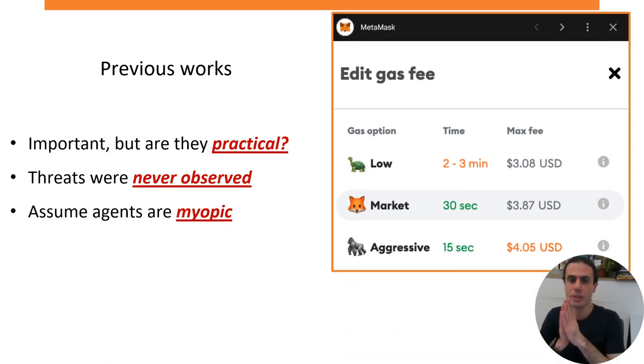Others have considered that cryptocurrency agents, meaning people that use and operate cryptocurrencies, are myopic. So they only care about the short term and do not plan for the future. But we know that some agents, at least some of the time, are non-myopic.